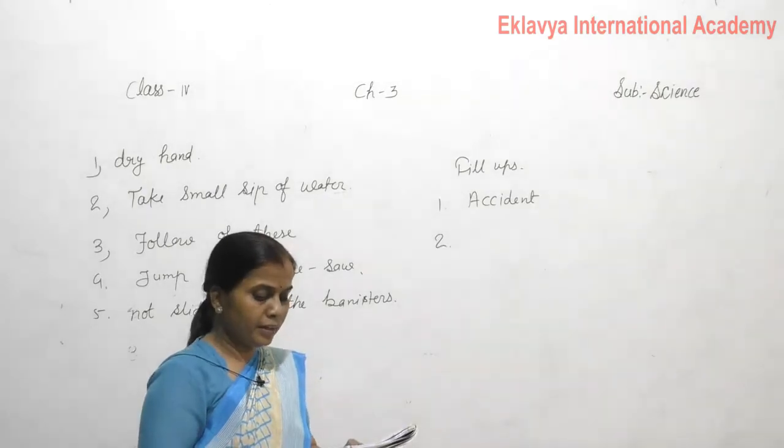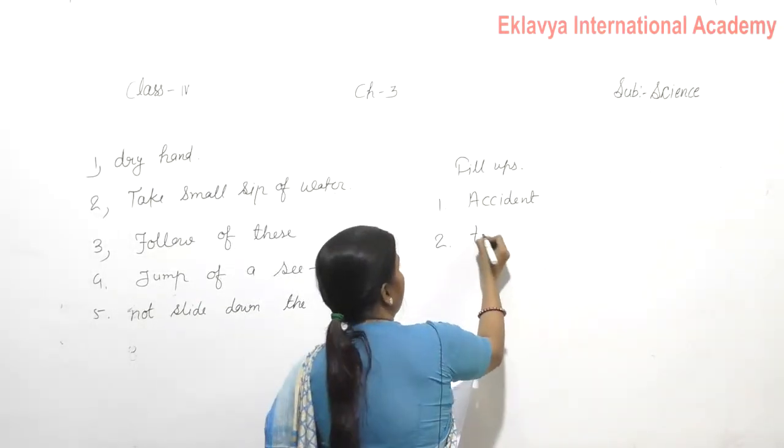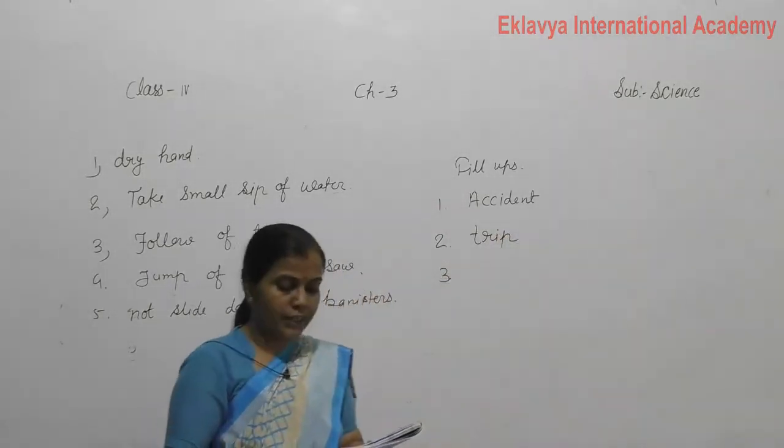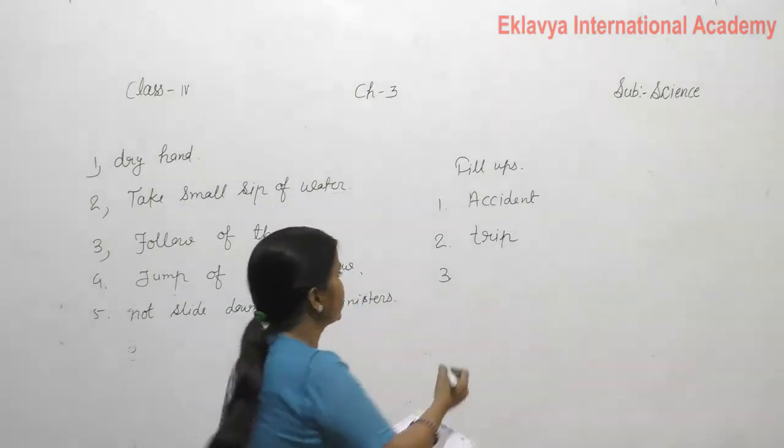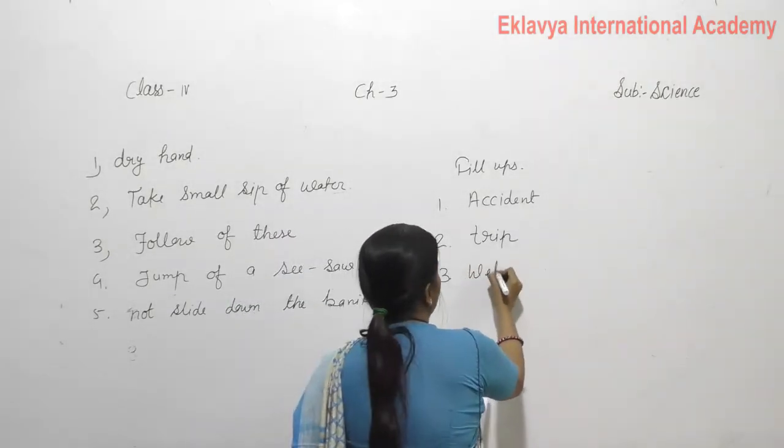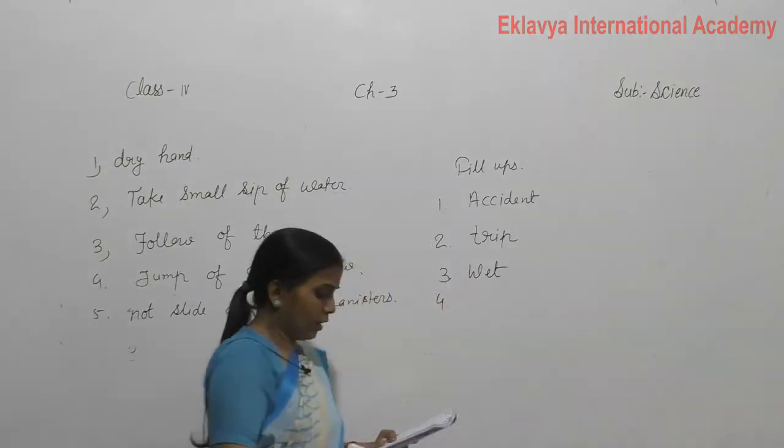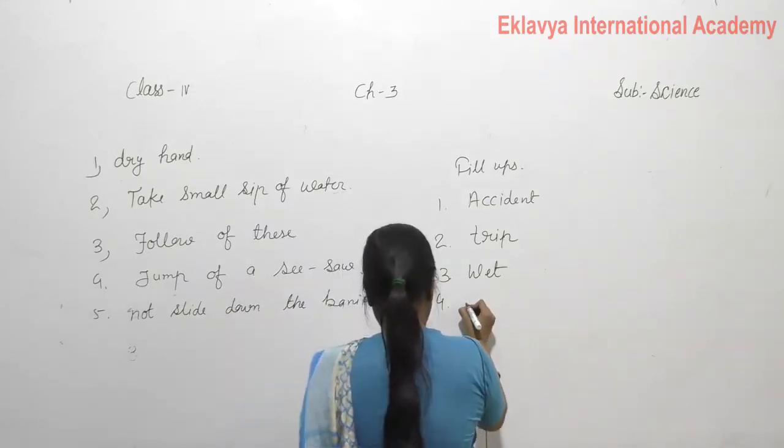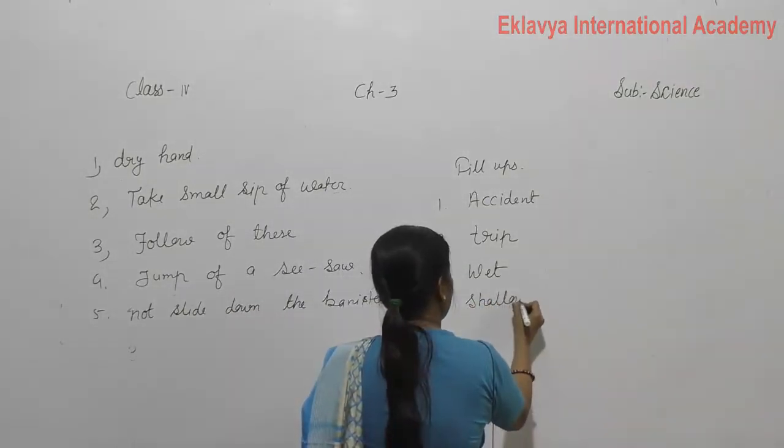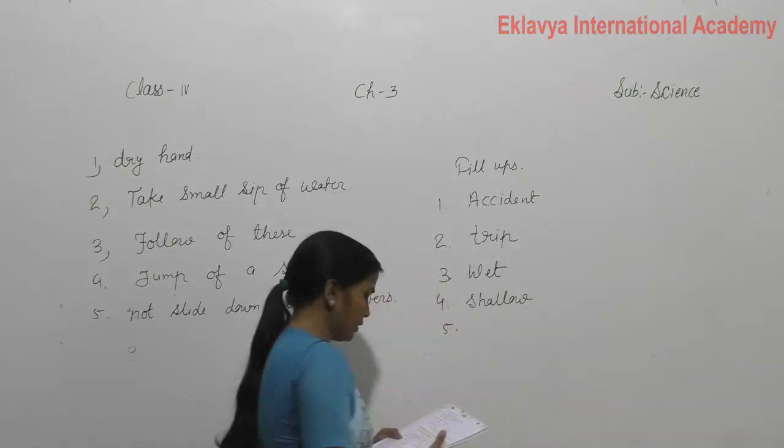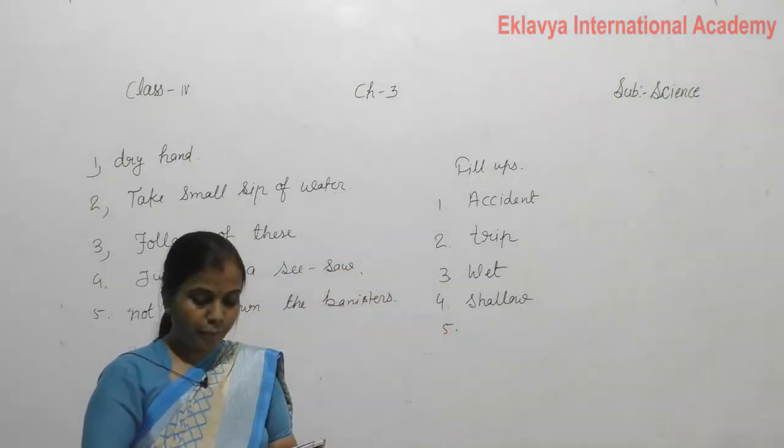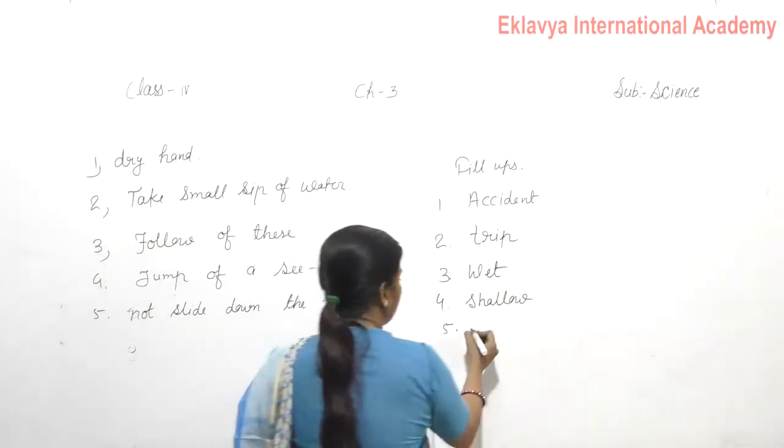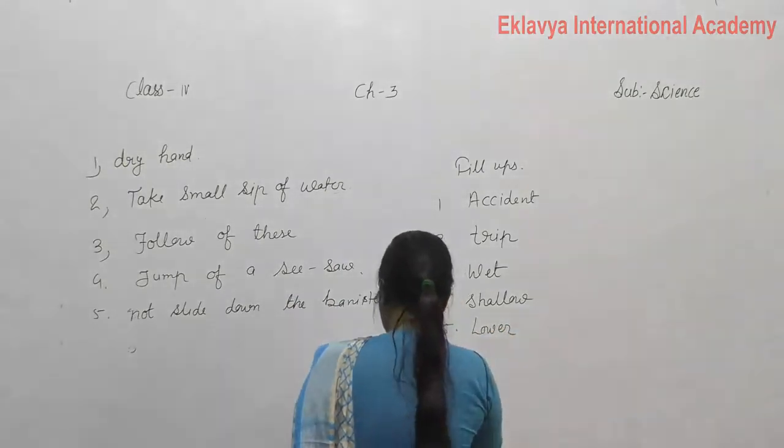Second one is if we leave things scattered on the floor, someone might trip over. Third one is we should not touch electric points with wet hands. Fourth one is always swim at shallow end of the pool.